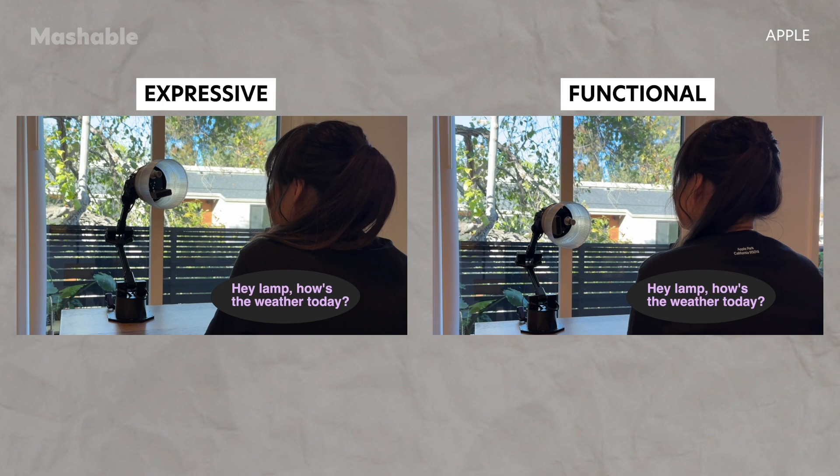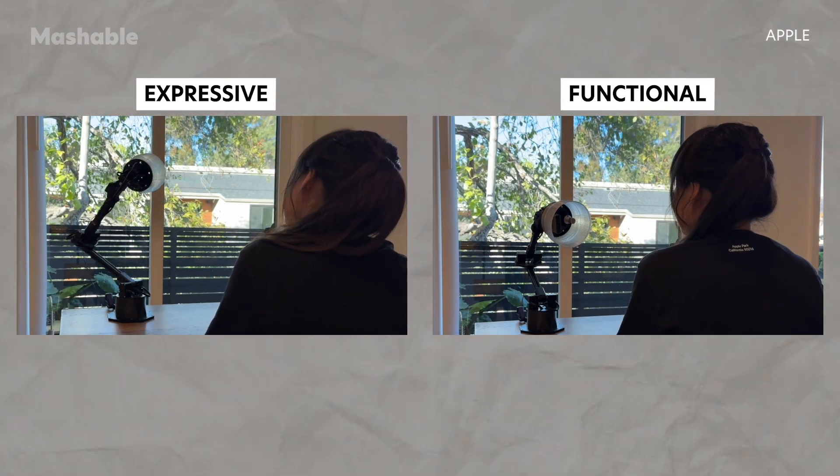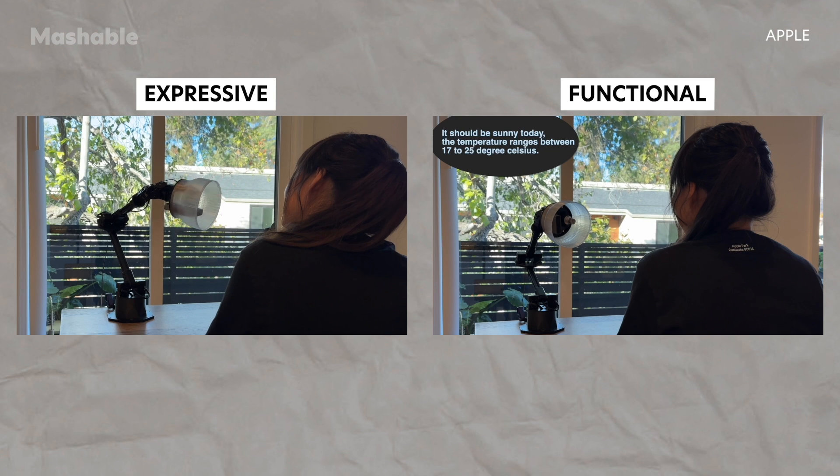When asked about the weather outside, the expressive robot turns towards the window, much like a person would, before it gives a report.